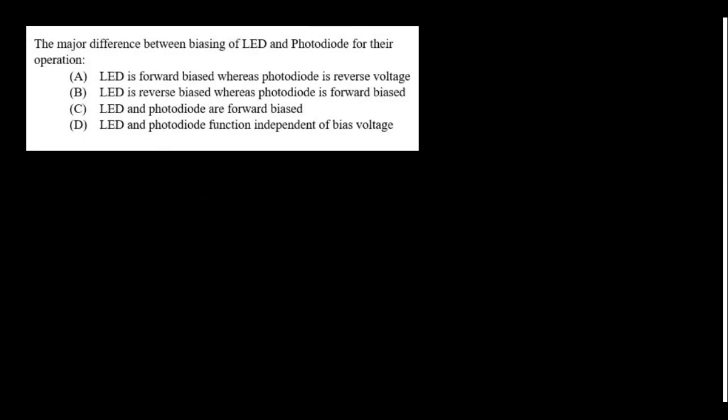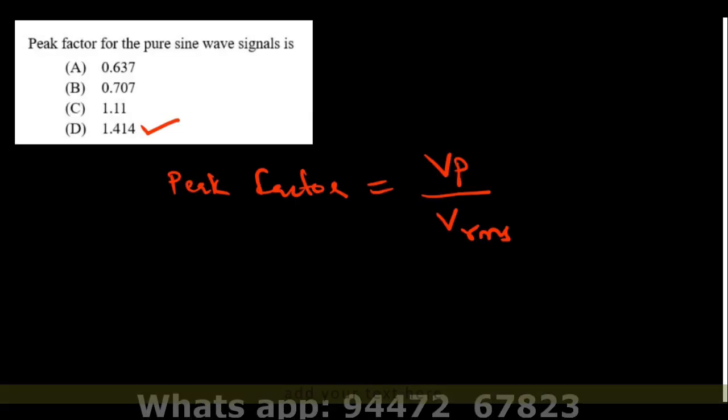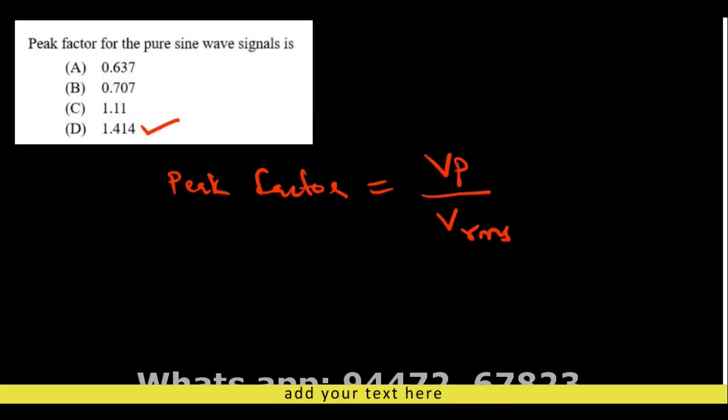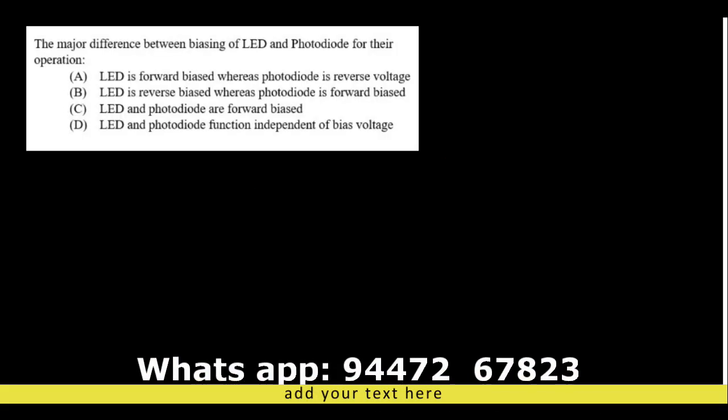The major difference between biasing an LED and a photodiode: LED is forward biased whereas a photodiode is reverse biased. Option A is the right answer.